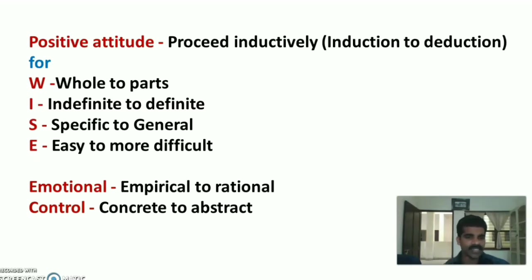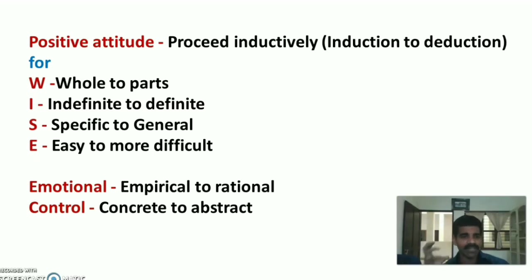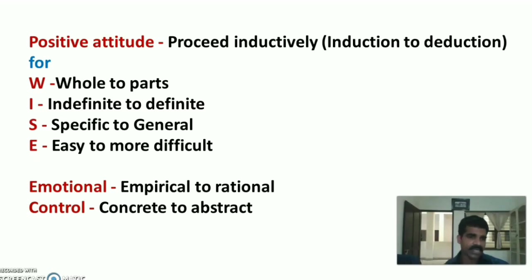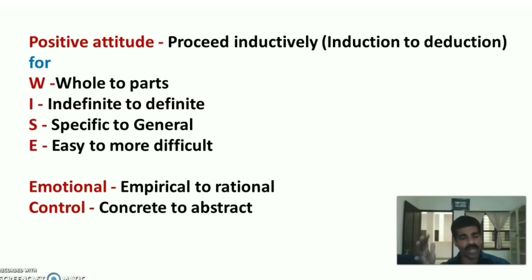'I' stands for indefinite to definite — first indefinite, then teaching follows through to definite. 'S' stands for specific to general — sometimes a topic can start with specific, then move to general things. 'E' stands for easy to more difficult — first explain the easy things, then move to the more difficult content. 'Emotional' stands for empirical to rational — teaching should be empirical to rational, so scientific. 'Control' stands for concrete to abstract — teaching must start from concrete, then move into abstract.